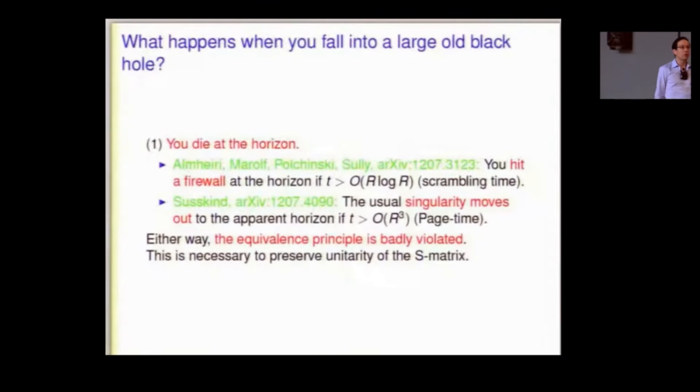What happens when you fall into a large old black hole? I'm going to make the black hole large just so that the horizon scale is very large compared to the observer who falls in so that we can apply the equivalence principle. Things should be like flat space at the horizon.